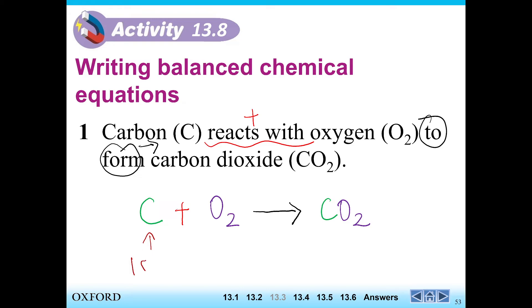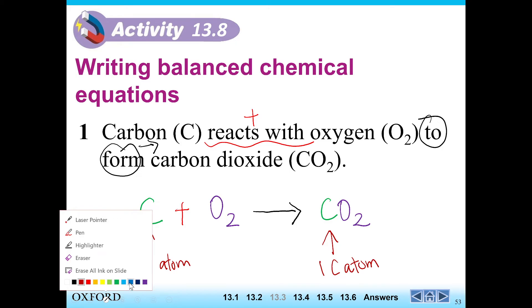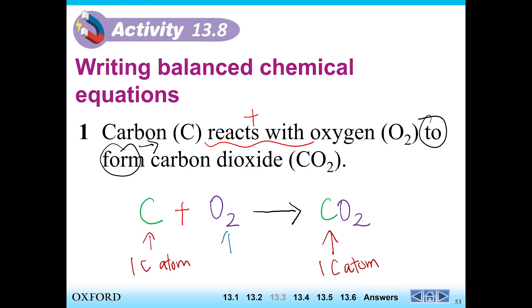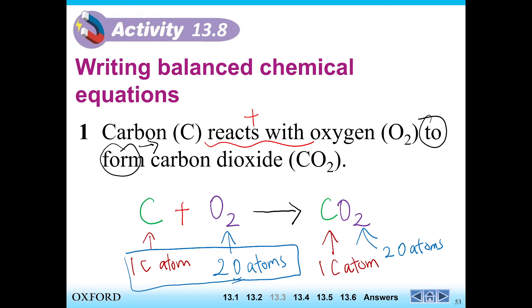Here I have one carbon atom on the left hand side. How about the right hand side? I also have one carbon atom here, so carbon is perfectly balanced. On the left hand side I have two oxygen atoms, and on the right hand side — the product side — I also have two oxygen atoms. That means the left hand side is perfectly balanced. The number of atoms are balanced, so this equation is actually already balanced. You don't need to balance it.